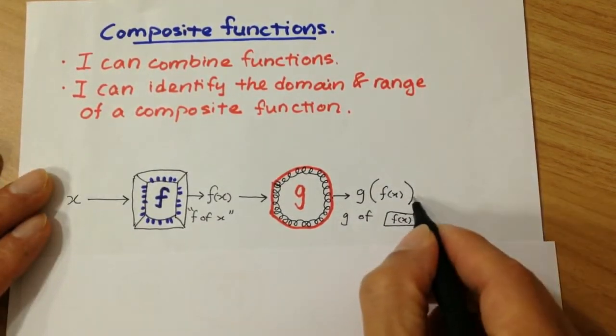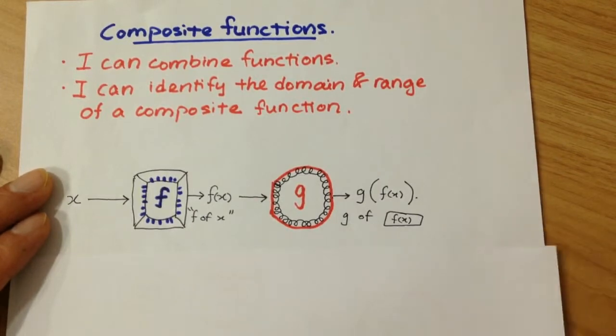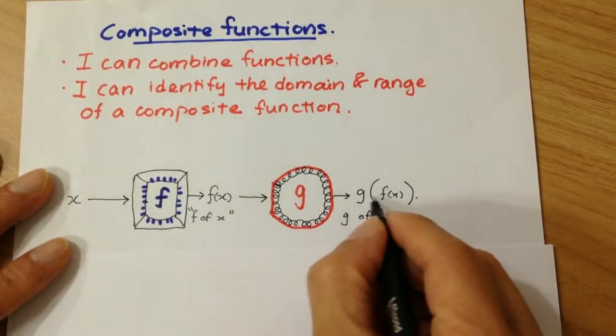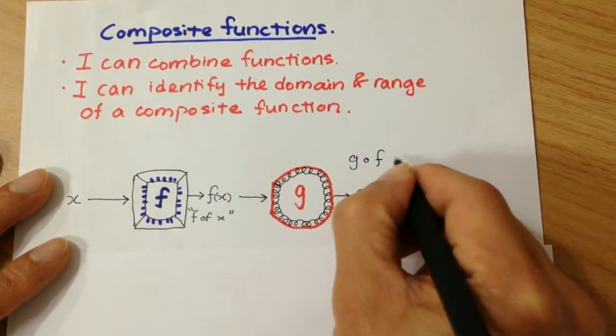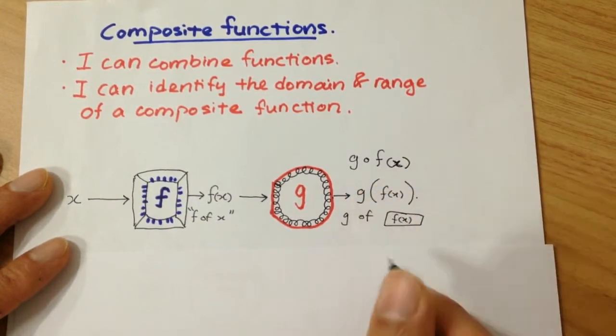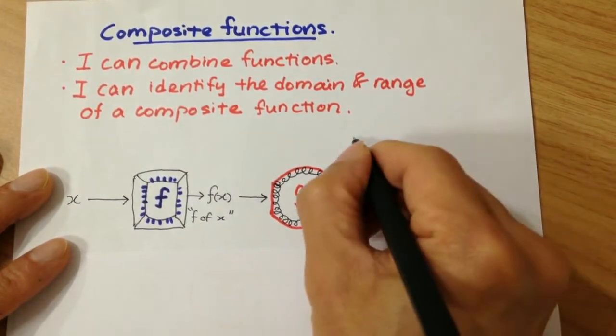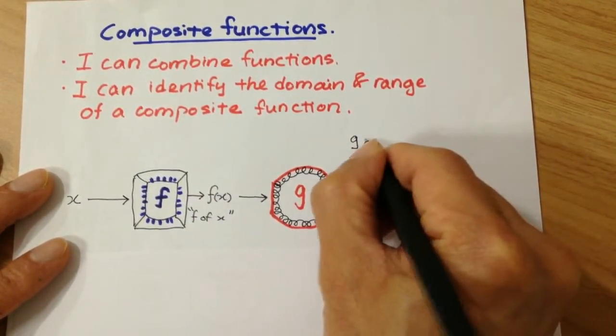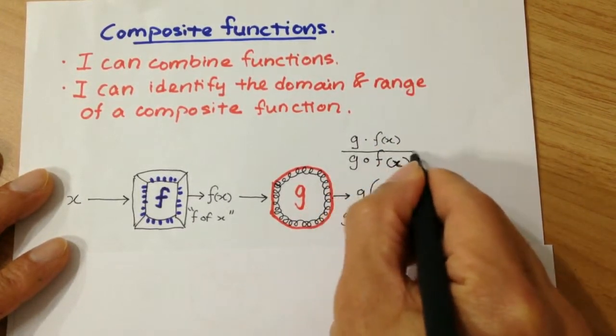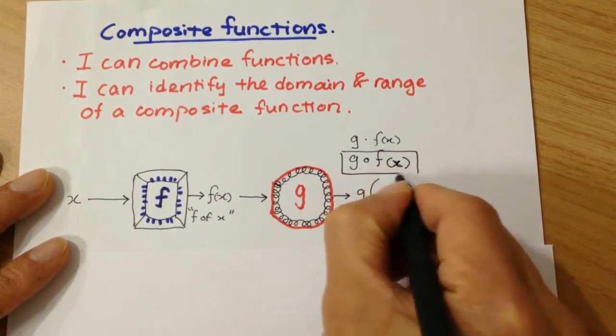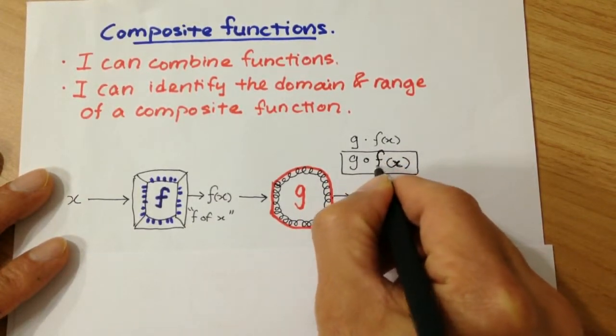So this is what we call a composite function. Composite function can be written as g f of x, or g compose f of x. And it can also be written sometimes with a dot f of x. But in the IB examination, this is the preferred representation of composition.